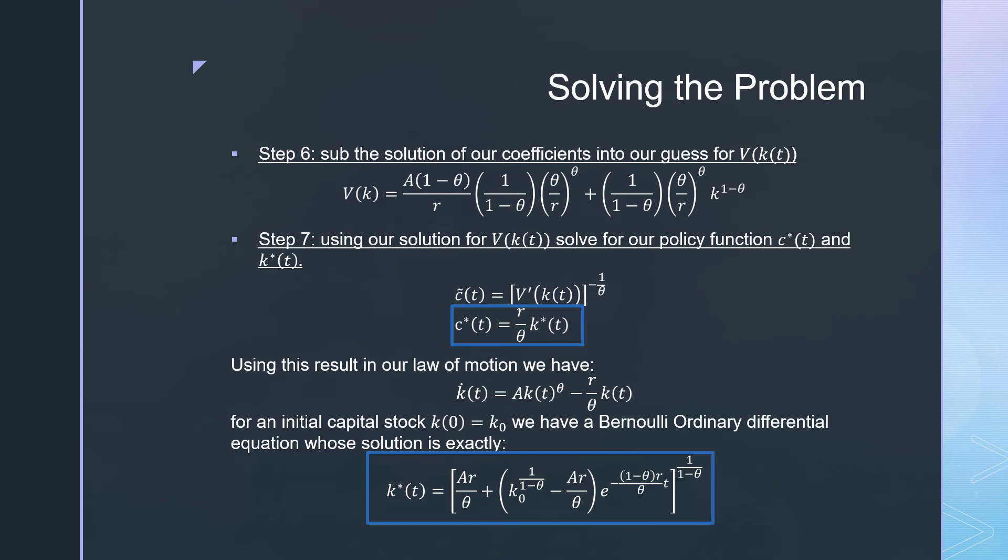And it's very cleanly here being r over theta times k*(t). Now I would just stop here, but we're solving for them both. The reason I have to solve for them both is it's not going to be like a cake eating problem where things are so clear. We have capital accumulation here.